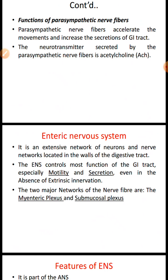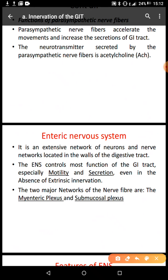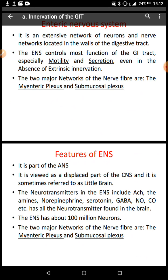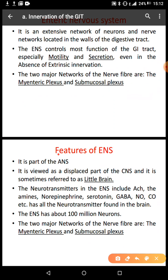The enteric nervous system is made up of the myenteric plexus and the submucosal plexus. It is part of the autonomic nervous system. That's why it is also called the 'little brain,' because most of the neurotransmitters secreted by the enteric nervous system can also be secreted by the brain. It has many neurotransmitters like amines, noepinephrine, serotonin, GABA, nitric oxide, and carbon monoxide, and it has about 100 million neurons.